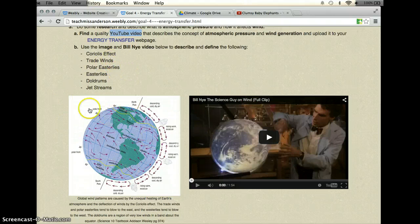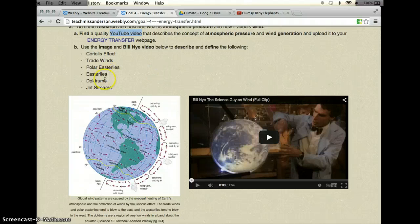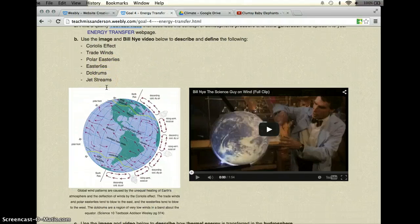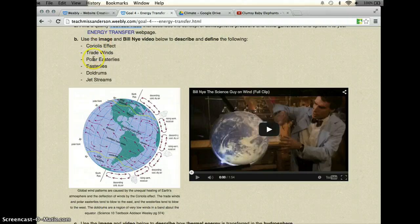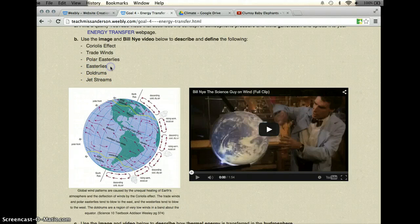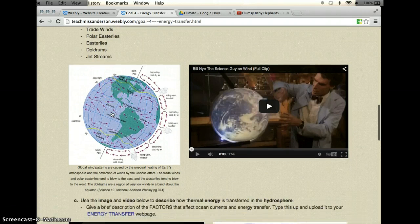Once you've done that, you're going to use the image here below and this Bill Nye video describing wind. And you're going to describe the following definitions. So here you'll see it says Coriolis effect, trade winds, polar easterlies, this should say westerlies, doldrums and jet streams. I will change this right away here so that says the correct thing there.